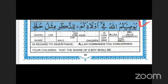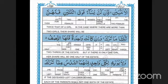Ayah number 11: Yusikumullahu — Allah commands, wills, you all. Fi awladikum — concerning your children. Liddakari — for the male. Mithlu hazzil unsayayni — like the share of two females. Fa in kunna nisaan fauqa athnatayni — then if they were women, more than two females. Falahunna — so for them. Sulutha — two-thirds. Mimma taraqa — of what he left.